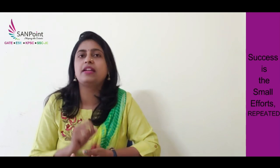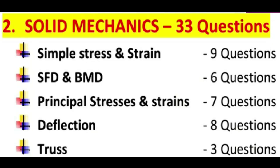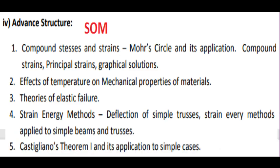Now let's see the paper analysis clearly. From strength of materials, 33 questions appeared: from simple stress and strain — 9 questions, SFD and BMD — 6 questions, principal stress and strain — 7 questions, deflection — 8 questions, and from truss — 3 questions. No questions had appeared from column, torsion, pressure vessels and springs.